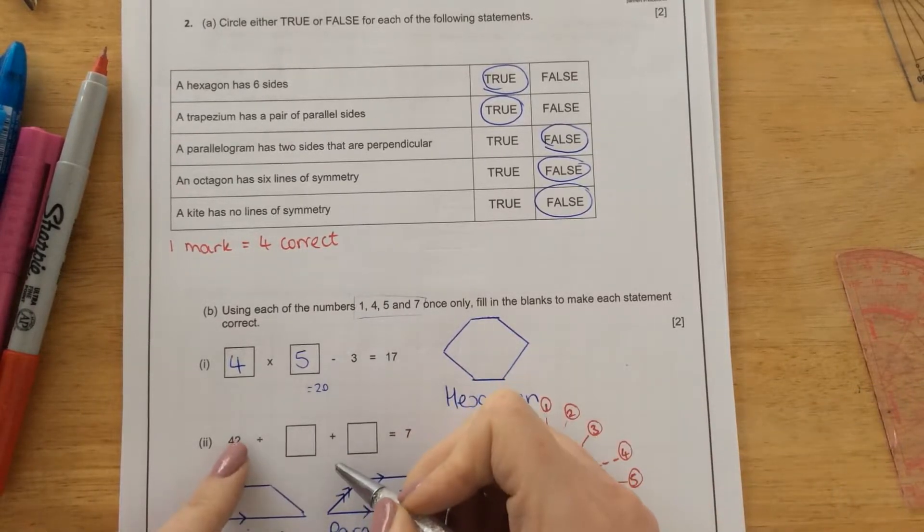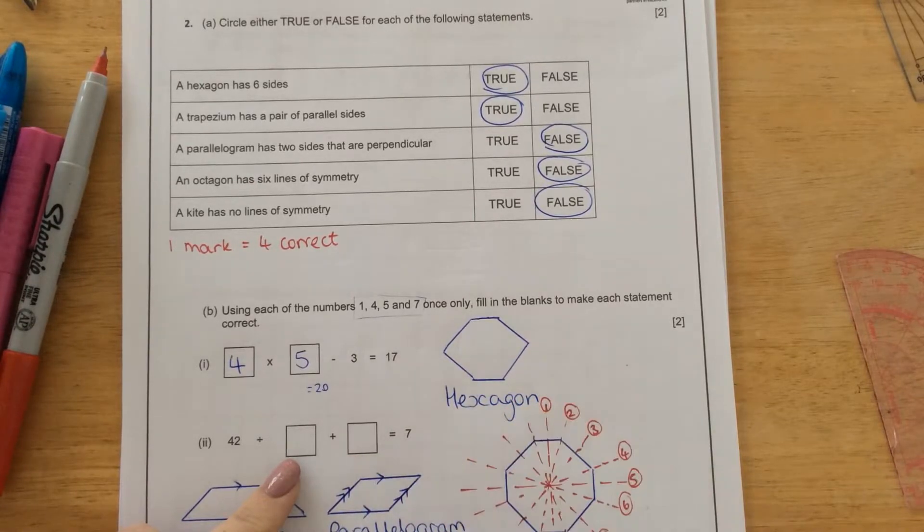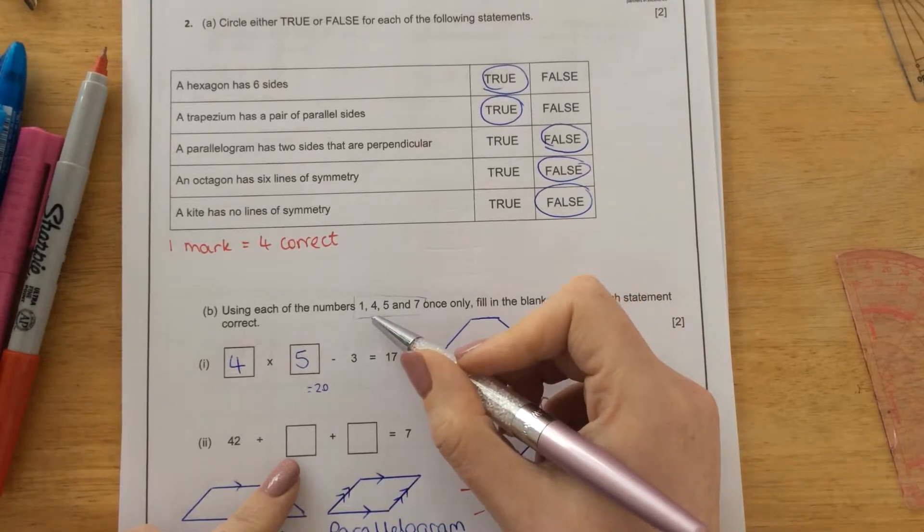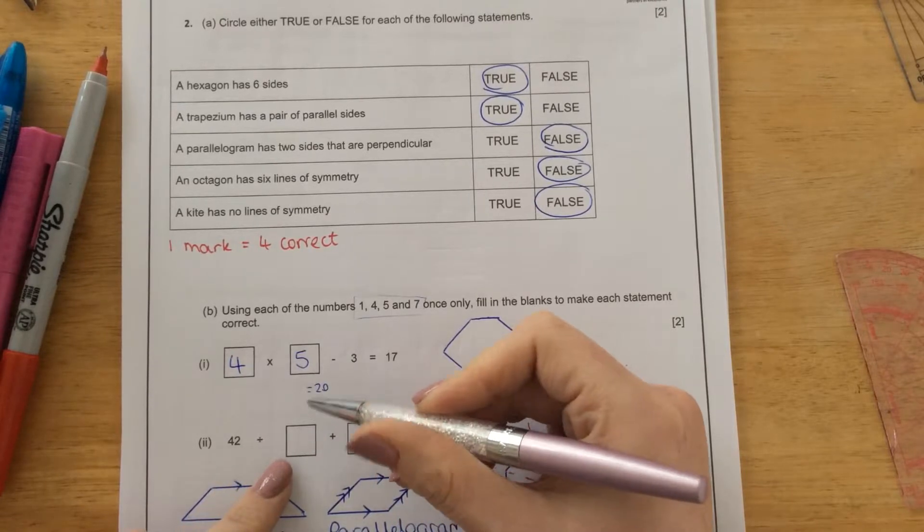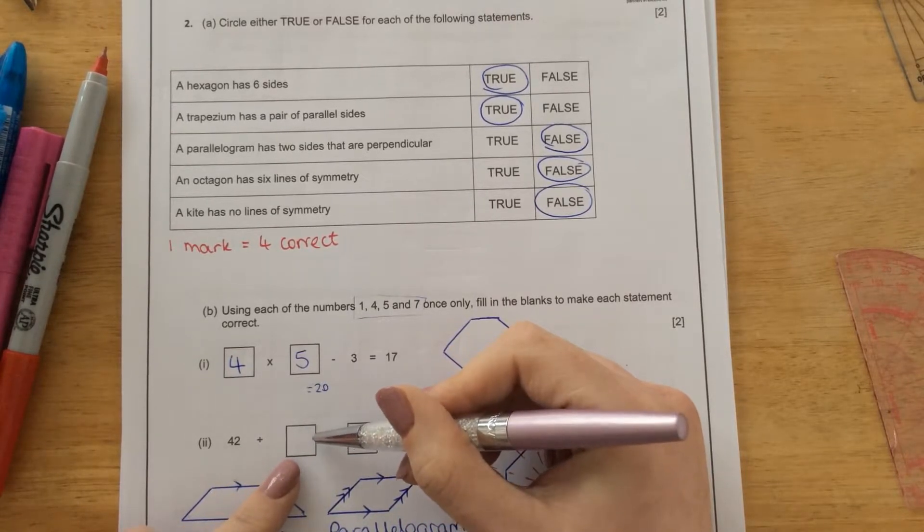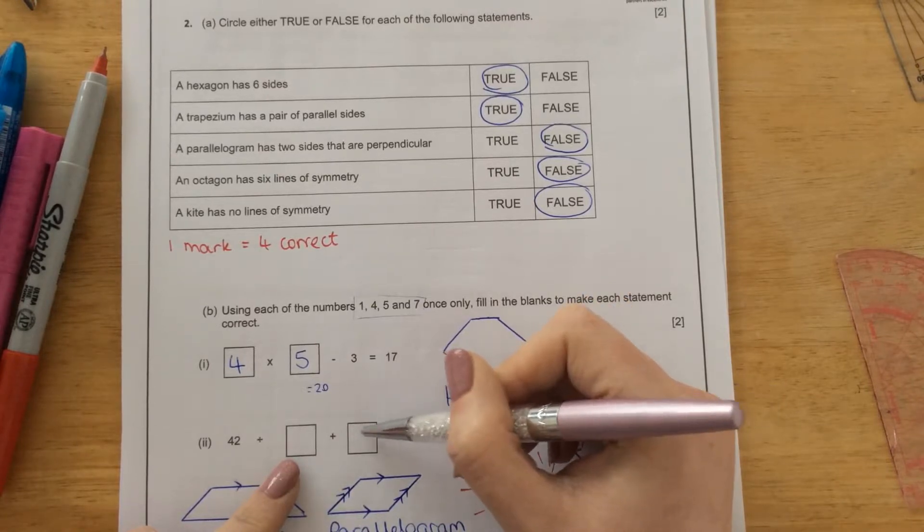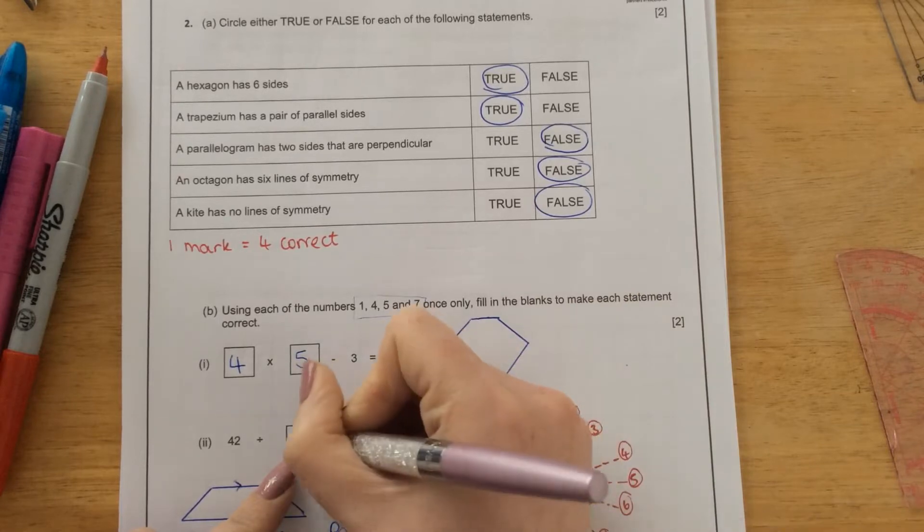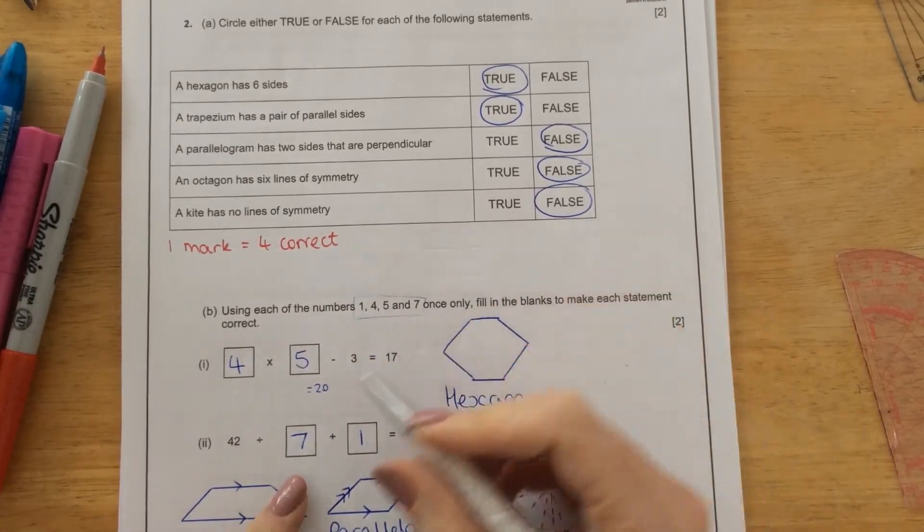The next one, 42 divided by something, add on something else, gives you 7. So we're left with 7 and 1 at the minute. So if I had 42 divided by 1, that would be 42. Add on what would give me 7? If I add 7 there to 42, it wouldn't give me 7. So the only option to have this would be 7 and 1.